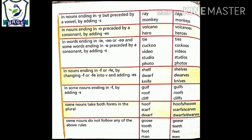See the word photo. Photo ends in O and before O we have a consonant. But according to the above mentioned rule, if it ends in O and before it is a consonant, ES should be added. But here S is added. So it is an exception.